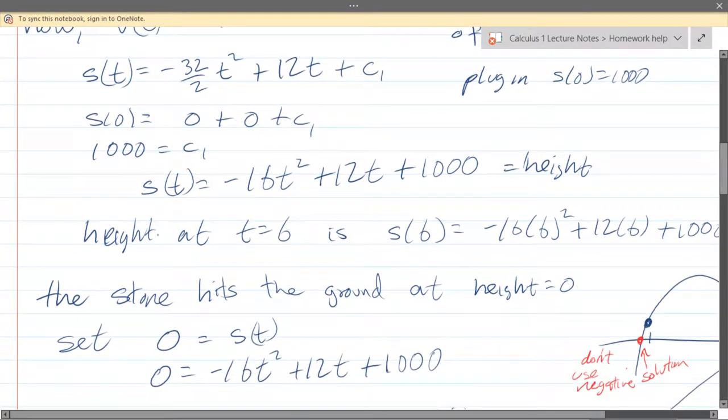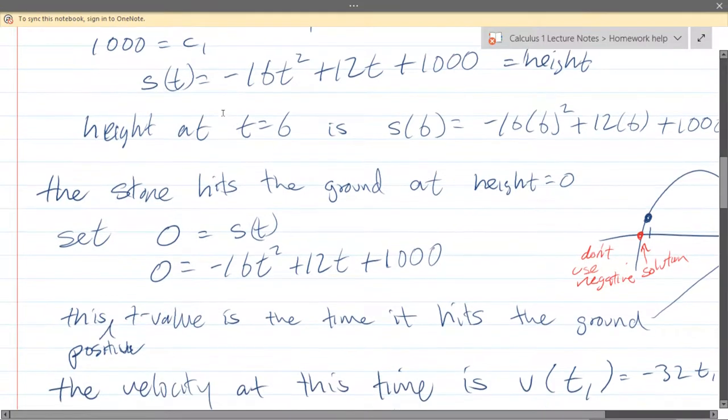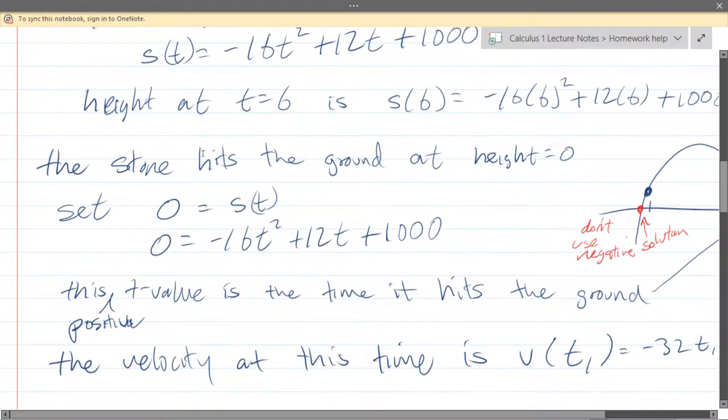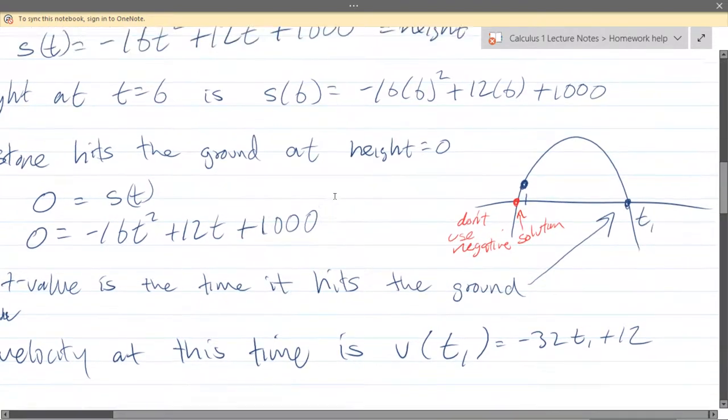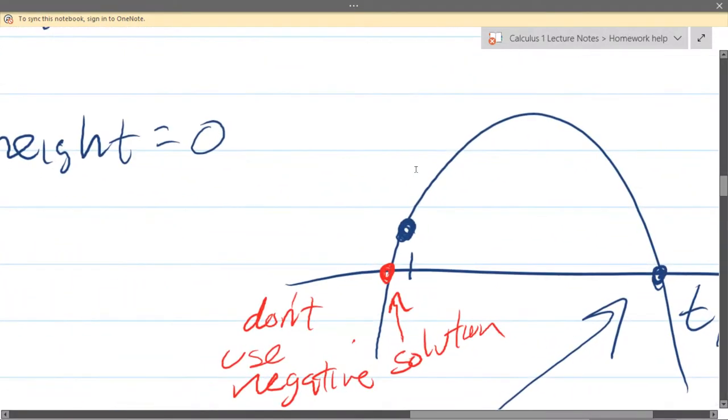So we have that happening right here. Now these numbers are a bit big, you could divide out, they're all even, you could divide everything by two maybe by four. Let's graph this quickly, so here's our graph, it's a sad parabola, it does start at a height of 1000 and this would be our y-axis so this height would be 1000 right here.